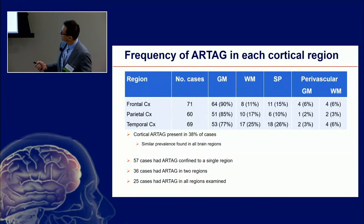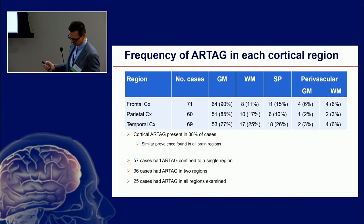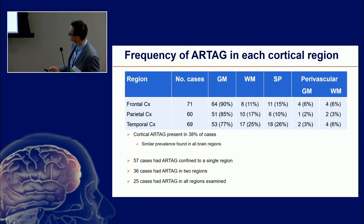ARTAG was pretty frequent: from the 310 individuals, we found around 60 to 70 cases. ARTAG was predominated by the gray matter form, followed by the subpial and other forms.